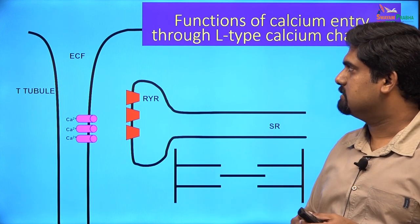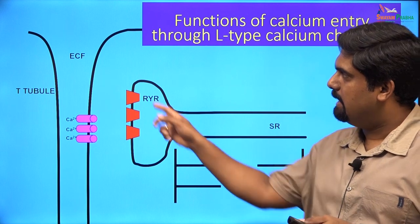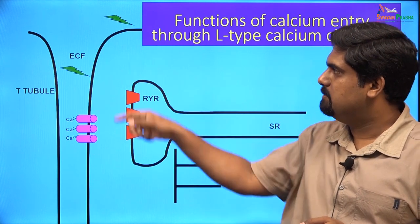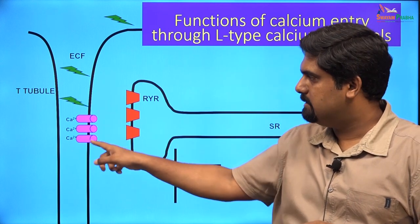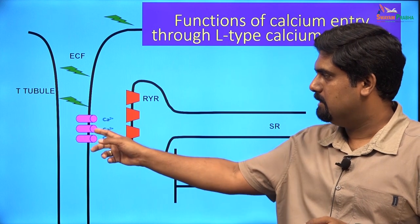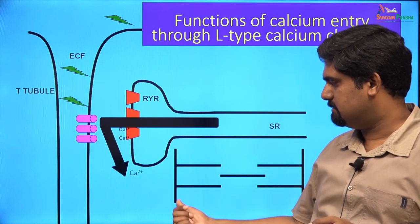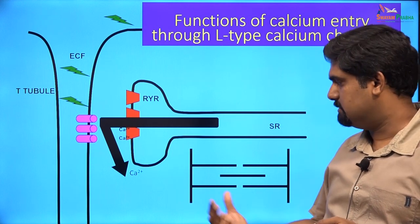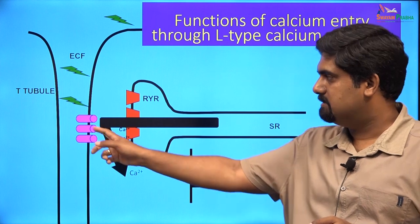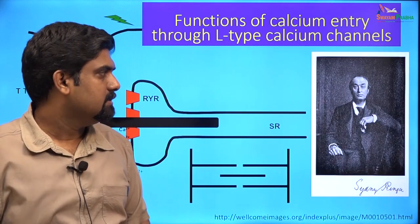In the cardiac muscle cell, ryanodine receptors are present on the sarcoplasmic reticulum, and the cell membrane invaginates into the cell forming the T-tubule. When the muscle gets depolarized, the signal travels deep into the cell through the T-tubules, activating L-type calcium channels on the T-tubule. This calcium then binds to ryanodine receptors on the SR causing calcium release, and the rise in intracellular calcium causes sliding of actin and myosin filaments resulting in contraction. Extracellular calcium is therefore very important for cardiac muscle contraction.